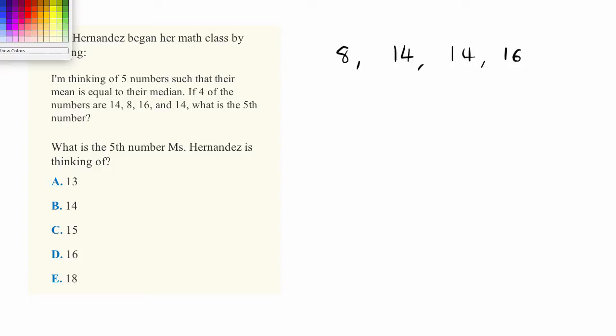I've written out the numbers here in order. The only number we don't know is some question mark number. There's some fifth number that we don't know, but I'm going to show you that the value of the median is the same no matter what the question mark is equal to.